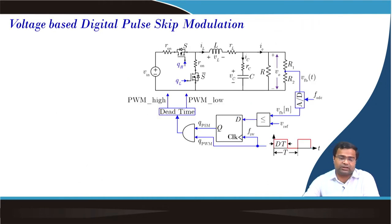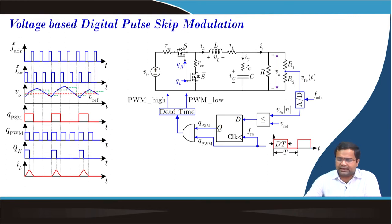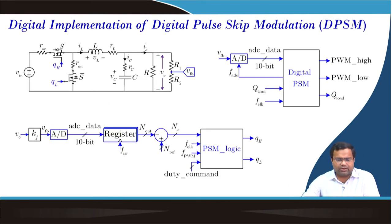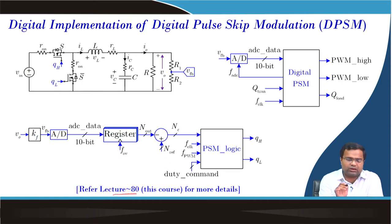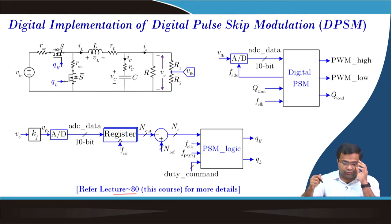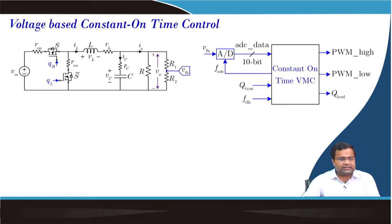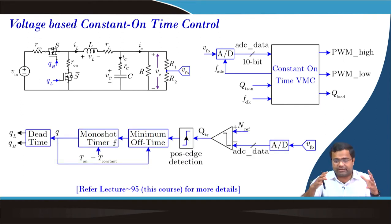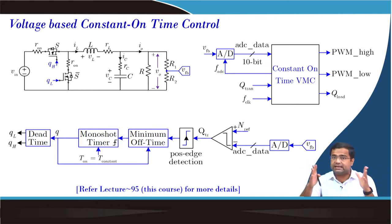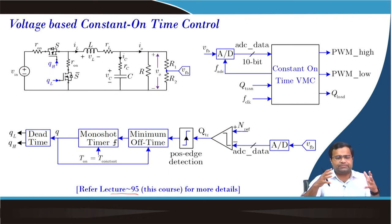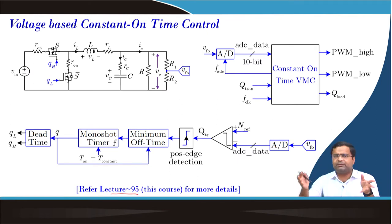Digital voltage-based pulse skipping modulation was also discussed. Using an ADC eliminates the need for a separate analog comparator since the ADC itself acts like one. Lecture 80 covered how to implement this digital pulse skipping modulation in detail, including the Verilog HDL code for the control logic. Voltage-based constant on time control — a variable frequency control keeping on time constant — was covered in lectures 95 and 98, implemented using Verilog HDL and an FPGA device.